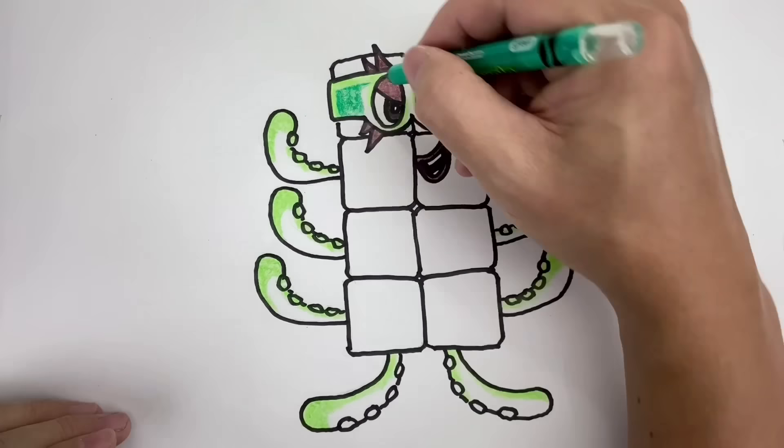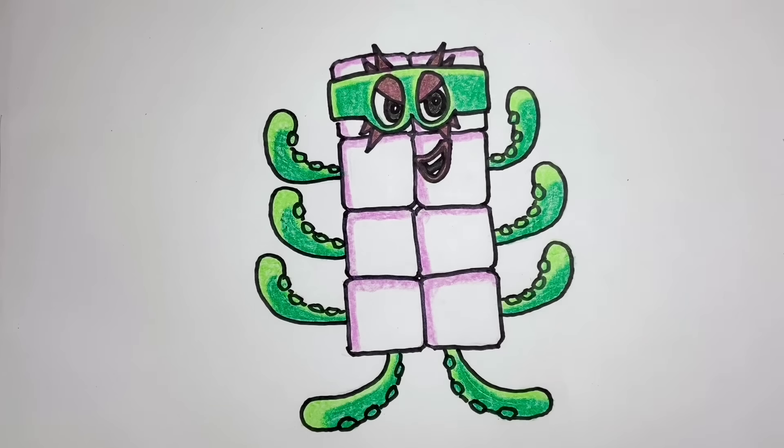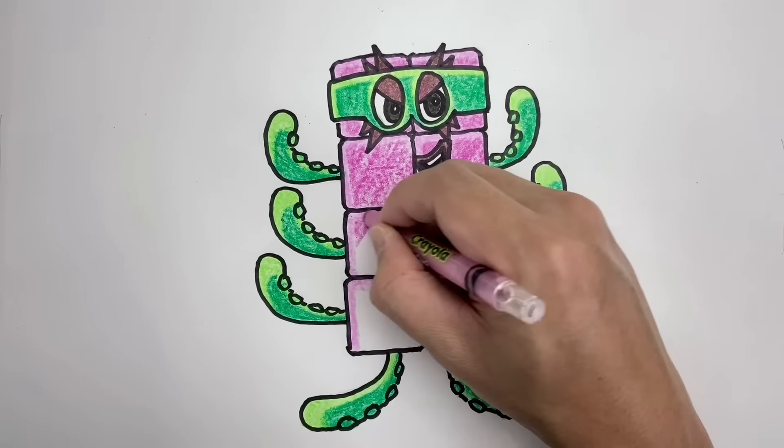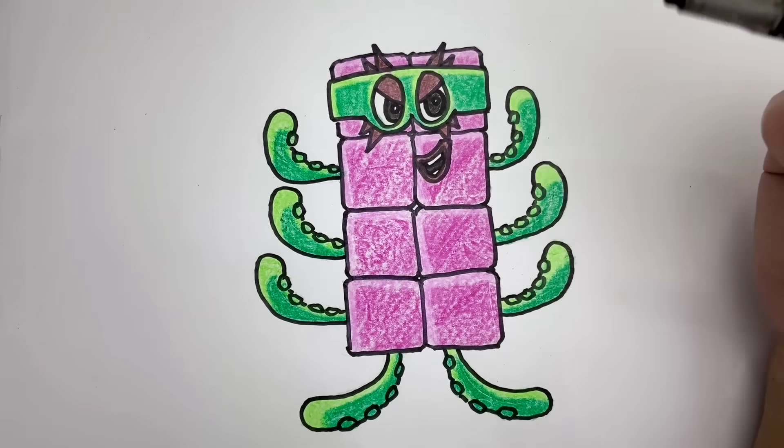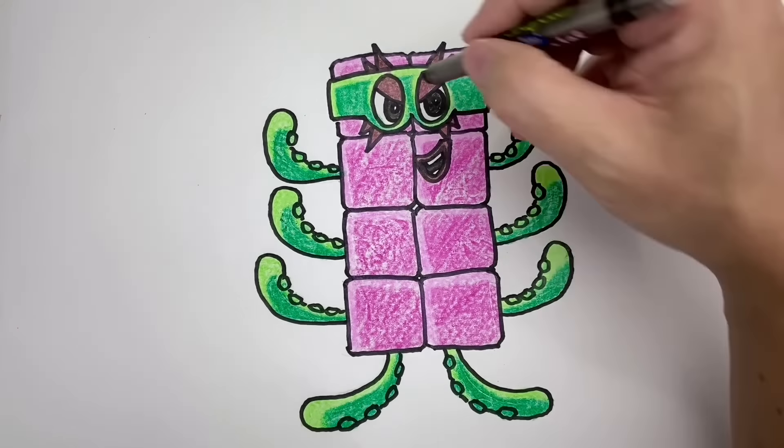Now it's time to color the blocks. Use the lighter pink crayon to color the upper left edges of his blocks. Then use the darker pink crayon to color the rest. Next, use the black crayon to add shadows on the bottom right edges of the blocks, opposite the lighter shade of pink.